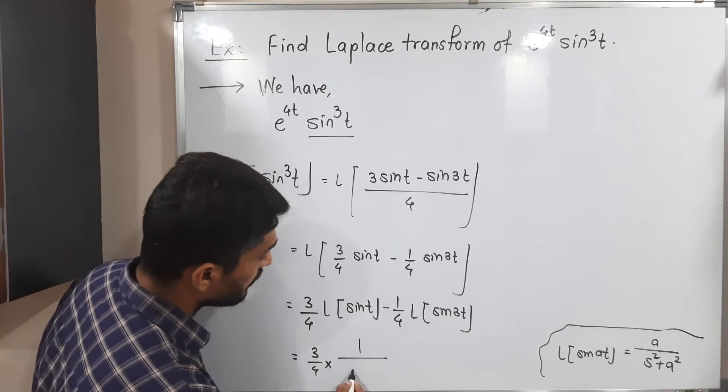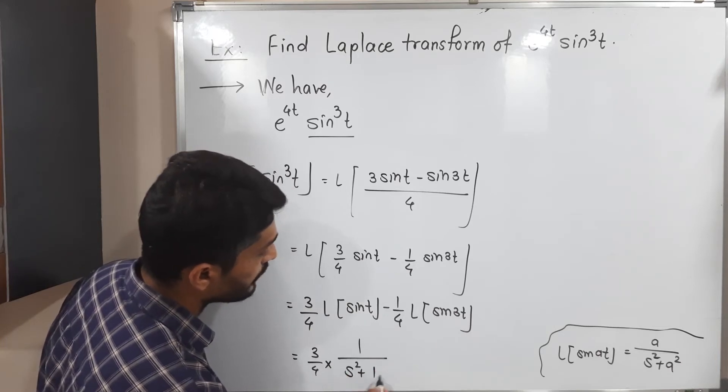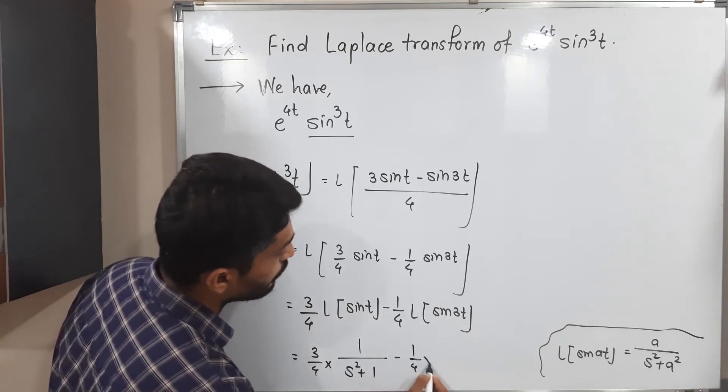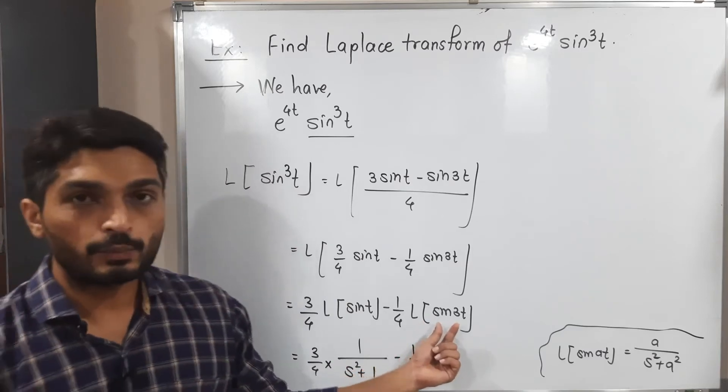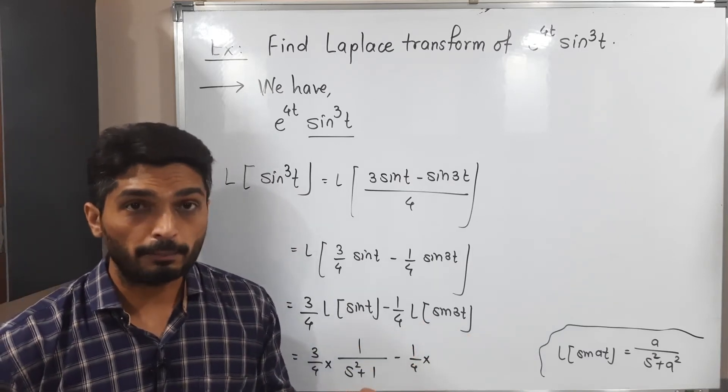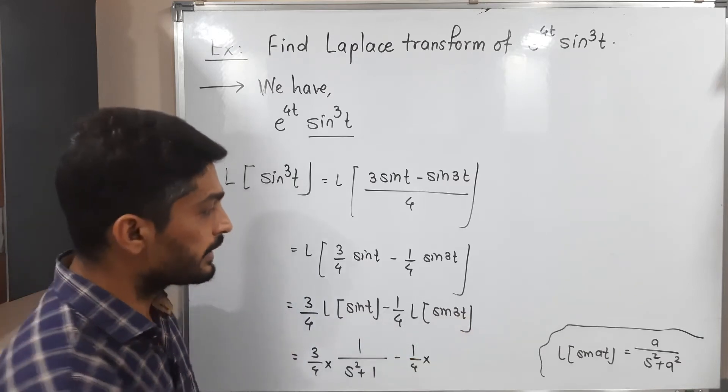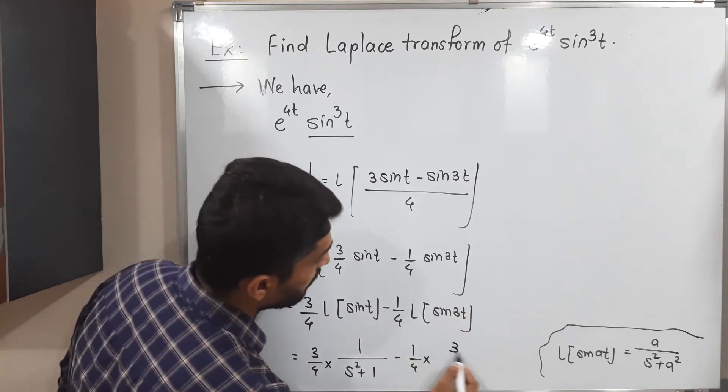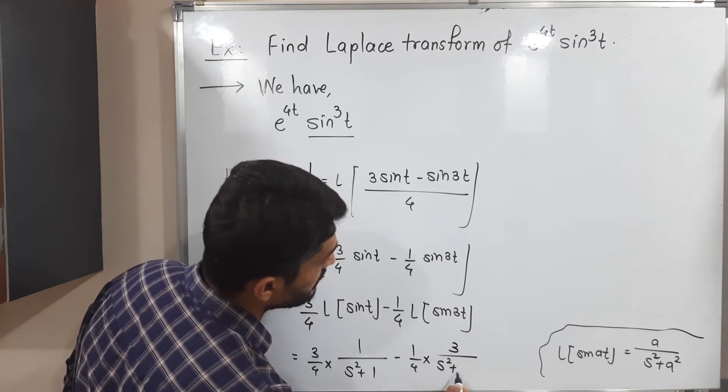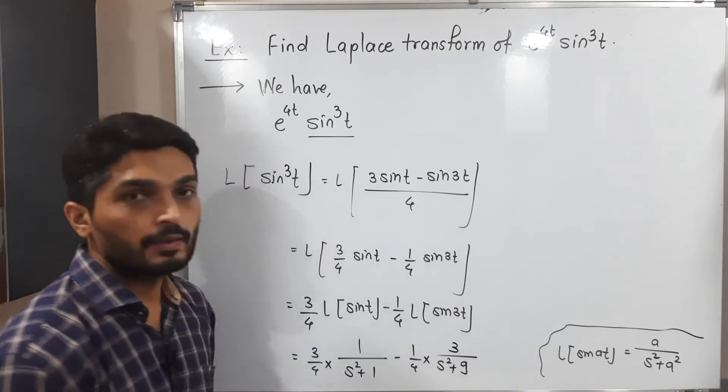So 1 upon s^2 plus 1^2 is 1 minus 1/4 into for this one. We have to apply the same formula. But here the value of a is 3 since at is here and 3t is here. So by using that formula, what will you have? We have 3 upon s^2 plus 3^2, which is 9.